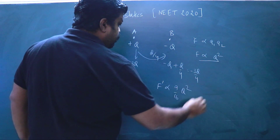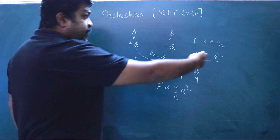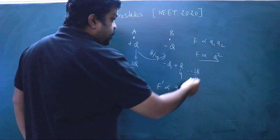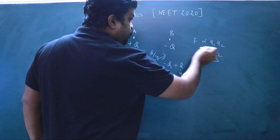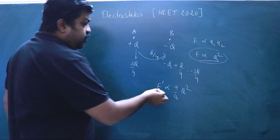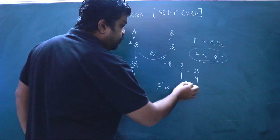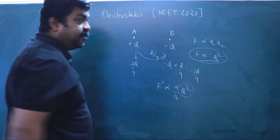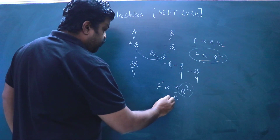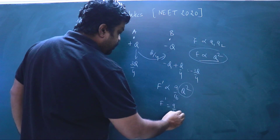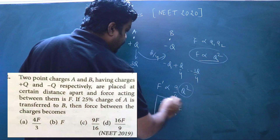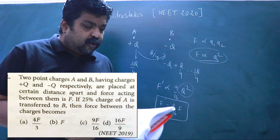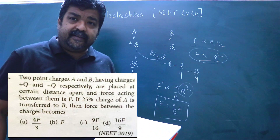The new force F′ is proportional to (3Q/4) × (3Q/4) = 9Q²/16. Since the initial force F is proportional to Q², we can write F′ = (9/16) × F. So among the given options, option C — 9F/16 — is the correct answer.